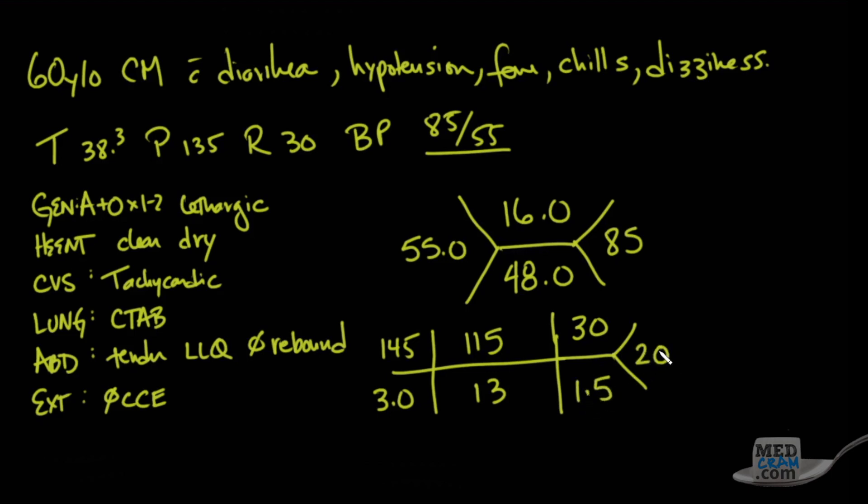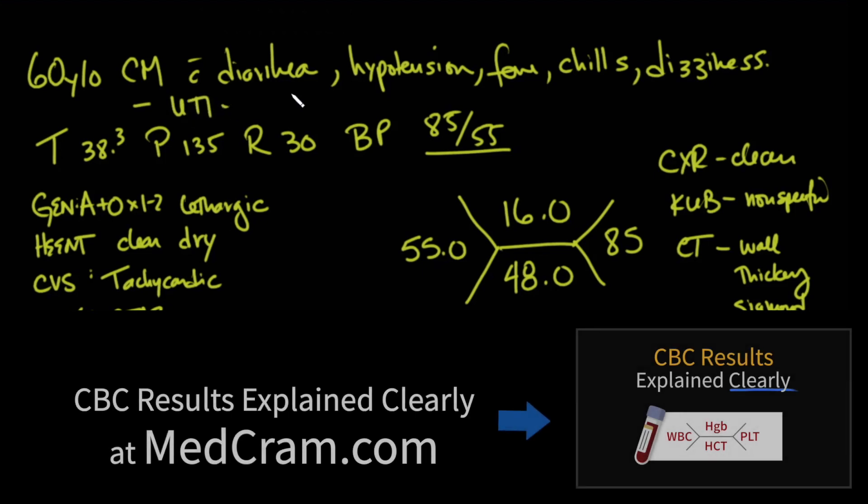Chest x-ray is clear, and the KUB is nonspecific. He gets a CT scan of the abdomen, and it shows wall thickening in the sigmoid colon. You ask further history, and the patient has had a UTI in the past for which he has gotten antibiotics.